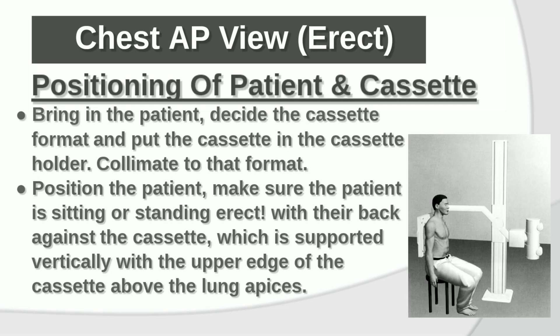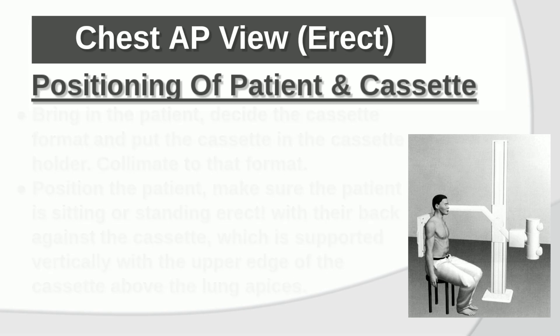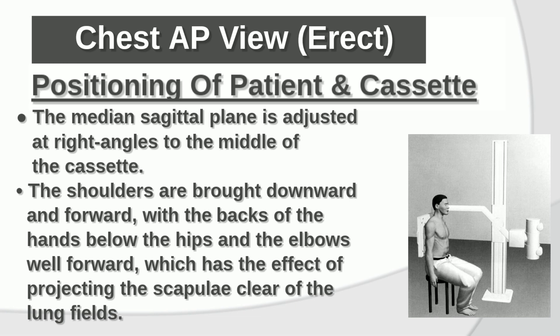Positioning of patient and cassette: Bring in the patient, decide the cassette format, and place the cassette in the cassette holder. Position the patient sitting or standing erect with their back against the cassette, supported vertically with the upper edge above the lung apices. The median sagittal plane is adjusted at right angles to the middle of the cassette. The shoulders are brought downward and forward, with the back of the hands below the hips and elbows well forward, projecting the scapulae clear of the lung fields.